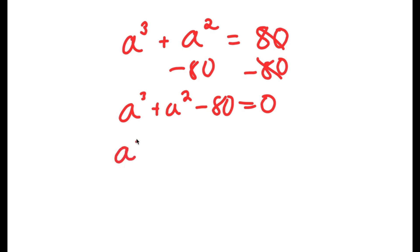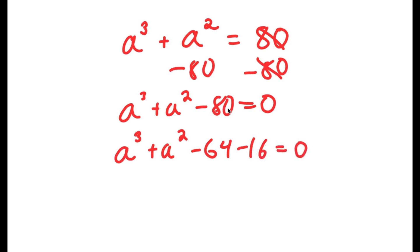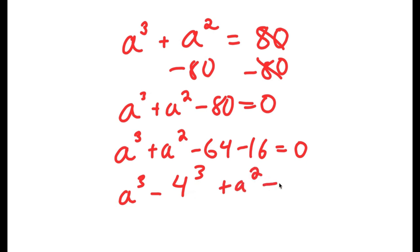Now I'm going to rewrite this as a to the power of 3 plus a squared minus 64 minus 16 is equal to 0. I simply wrote negative 80 as negative 64 minus 16. And now negative 64, I'm going to rewrite that as negative 4 to the power of 3. So I have a to the power of 3 minus 4 to the power of 3 plus a squared minus 16, which I'm going to rewrite as 4 squared.